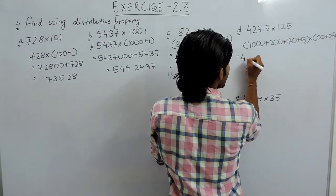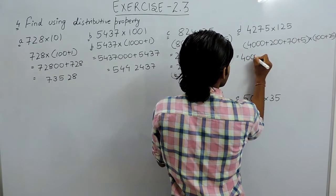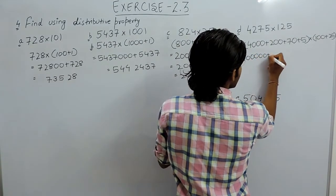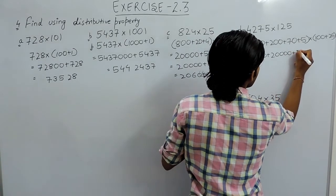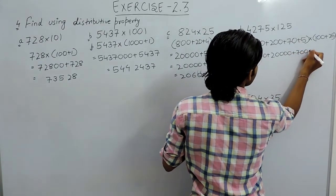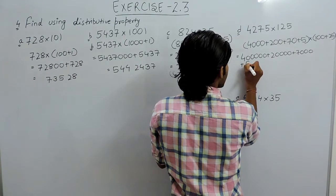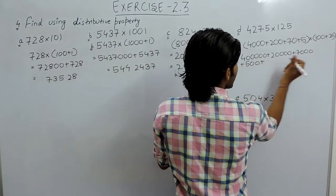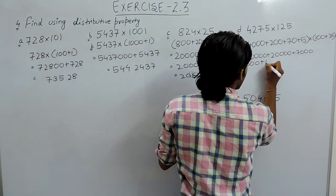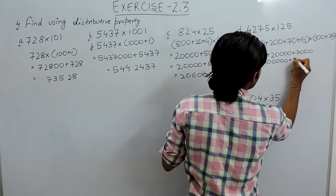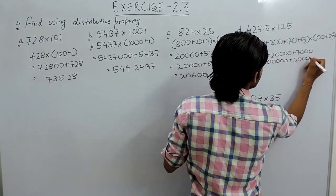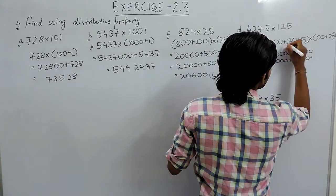So this will be 4 along with 5 zeros plus 2 along with 4 zeros plus 7 along with 3 zeros plus 500. And if we multiply it with 25 then it will be 25 times 4 equals 100 along with 3 zeros, 25 times 2 equals 50 along with 2 zeros, 25 times 7 equals 175.